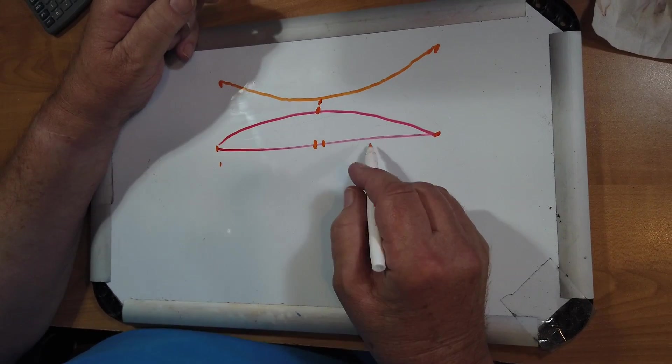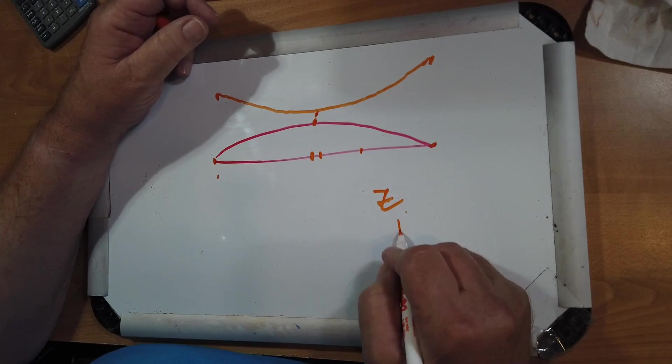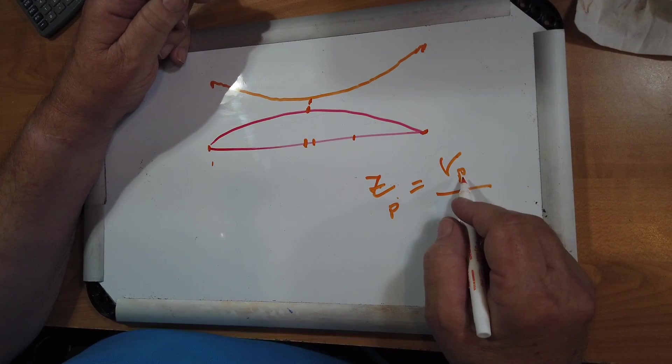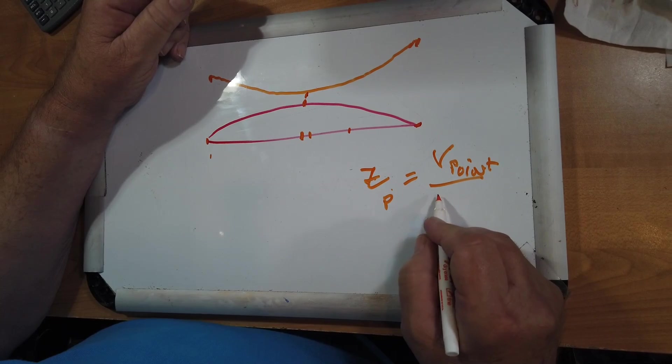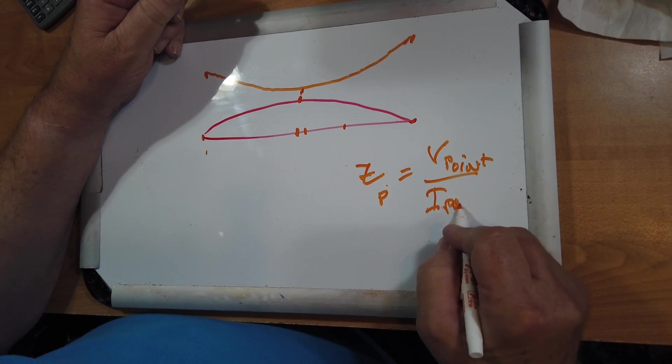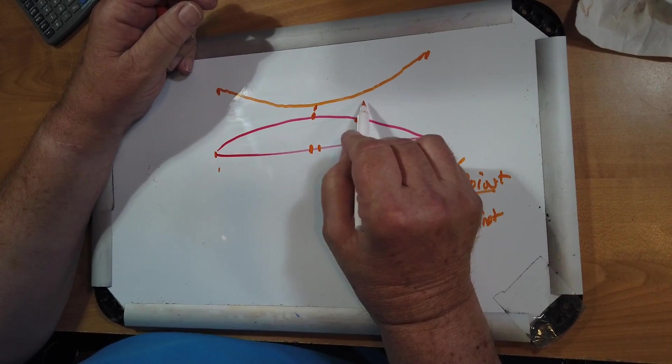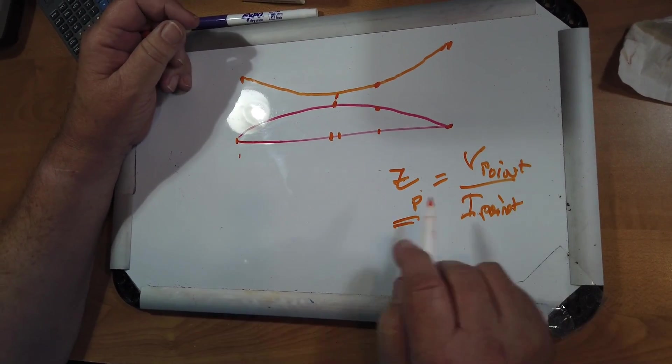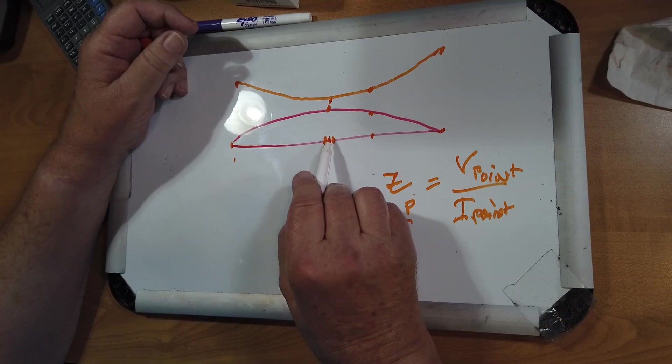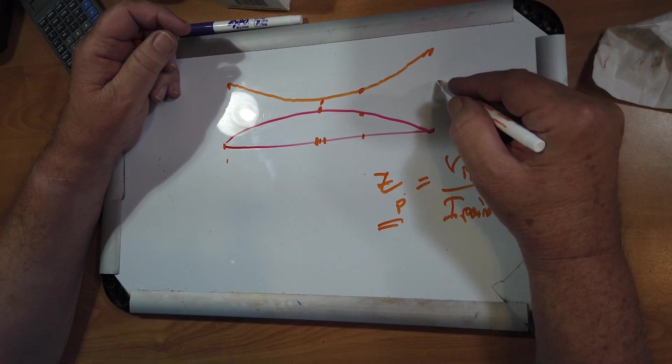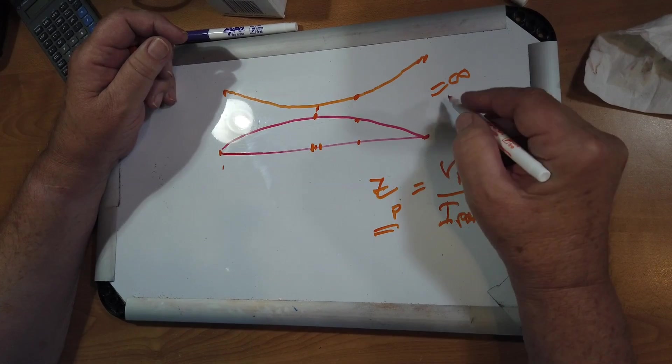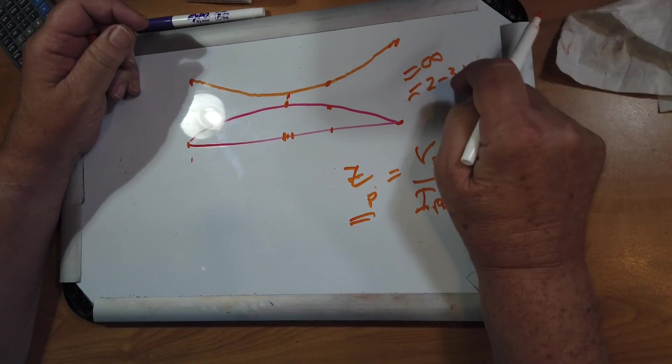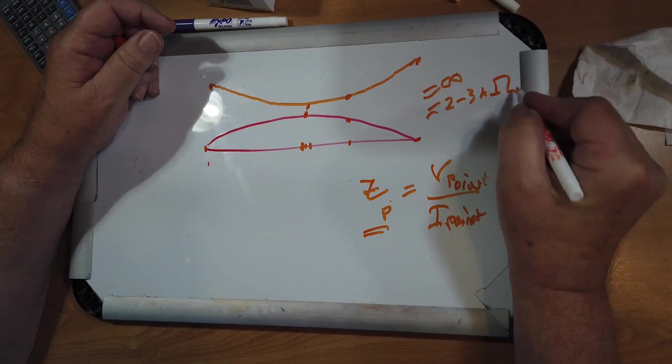Now, the impedance at any given point on here, so I'll say the impedance at a point is going to be the voltage at the point, not peak, but at the point, divided by the current at the point. Okay, so like point here. This is the impedance. Now, you can radiate power over this impedance. This impedance goes down, is the lowest in the middle, and the highest at the ends, where it is in theory infinity, but in practice it's maybe two to three kilo ohms.